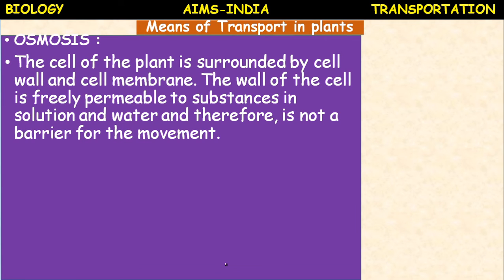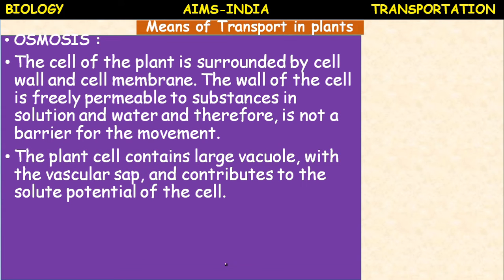The cell of the plant is surrounded by a cell wall, beneath that a cell membrane. The wall of the cell is freely permeable to substances in solution and water, and therefore is not a barrier for the movement. The plant cell contains a large vacuole with vacuolar sap - the fluid present inside the vacuole - which contributes to the solute potential of the cell.